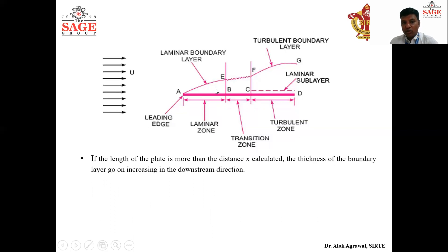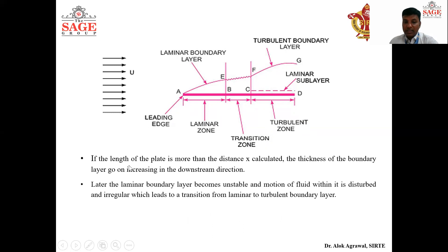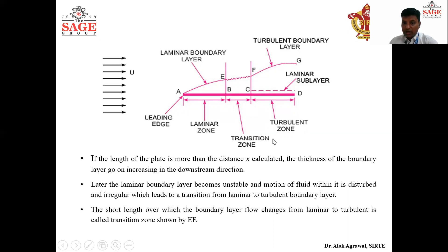If the length of the plate exceeds this value of x, the thickness of the boundary layer goes on increasing on the downstream side. Later, the laminar boundary layer becomes unstable and the motion of fluid within it becomes irregular — the flow changes behavior from laminar to turbulent. This change occurs between points B and C, and we call this the transition zone. This short length of the boundary layer where laminar flow transitions to turbulent is shown by EF.